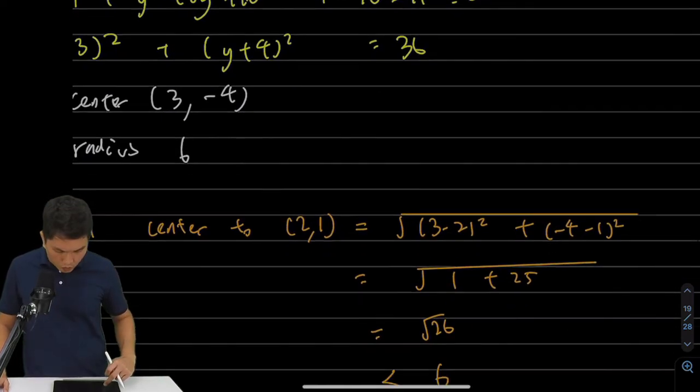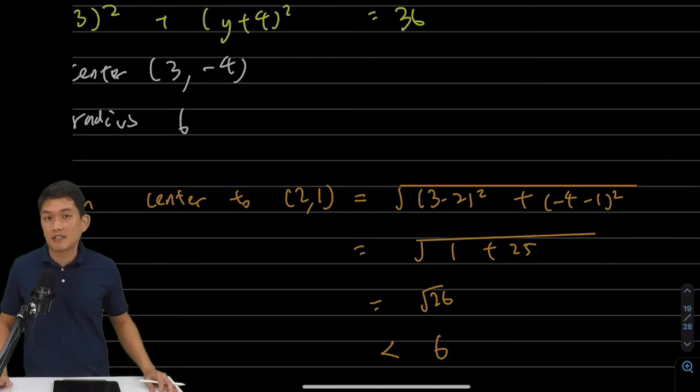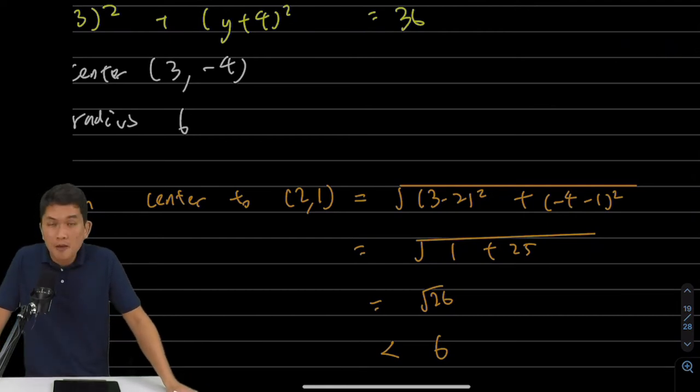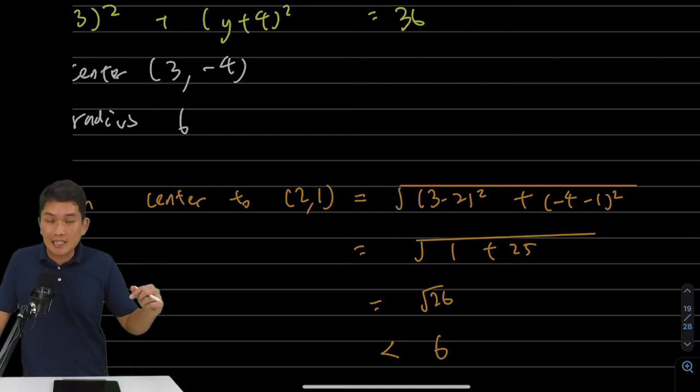Next, I can say that square root 26 is less than 6. Why? Because square root 26 is less than square root of 36, and square root of 36 is equal to 6. So square root of 26 is less than 6. Sorry about that, there's just a lot of 6s going on. But why compare it to 6? Because 6 is the radius of the circle. That tells me that this point is inside the circle.